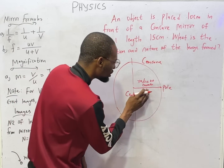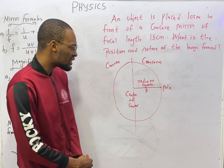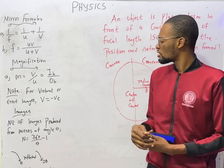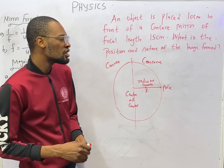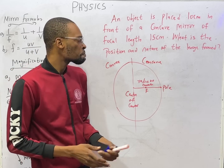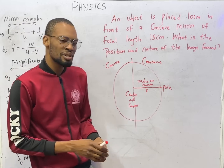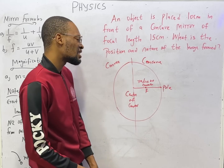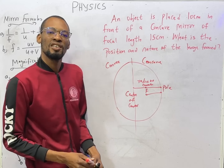From the pole to the center of curvature is the radius of curvature. Then at the middle, the center here is the focus. So the focus is basically the center of curvature divided by two. The type of image formed by a concave mirror is based on the position of the object — whether you place the object behind the center of curvature, at the focus, or wherever, that determines the type and nature of the image. Concave mirrors generally form real images, but if the object is between the focus and the pole, the image will not be real. The distance between the focus and the pole is called the focal length.